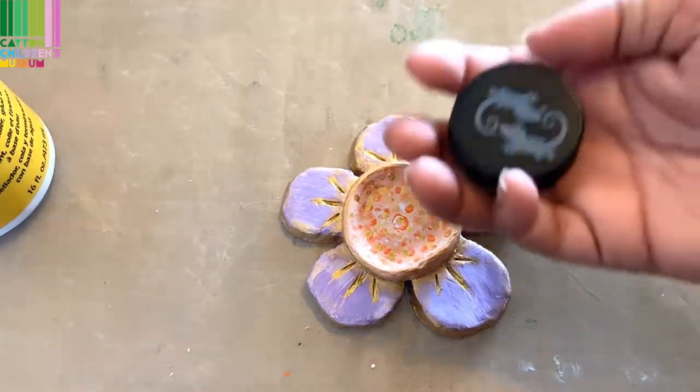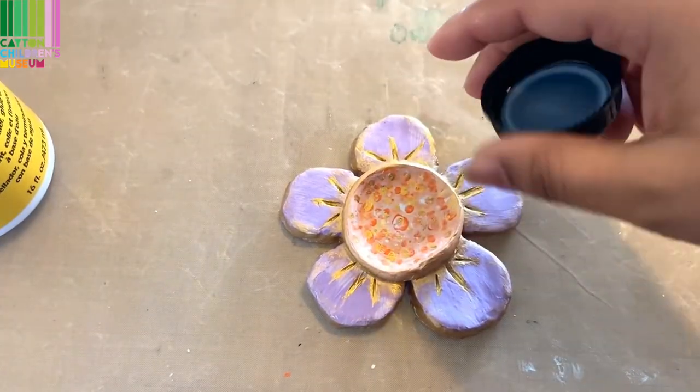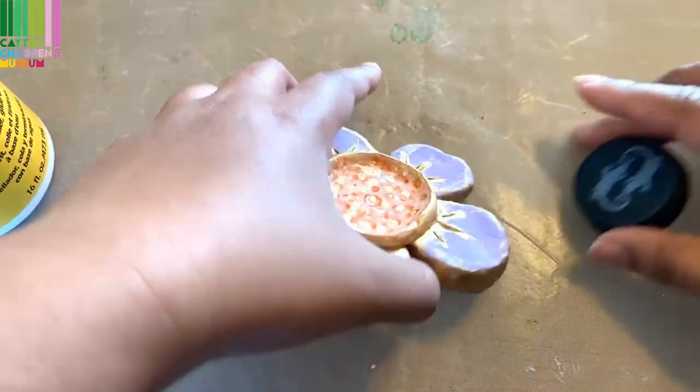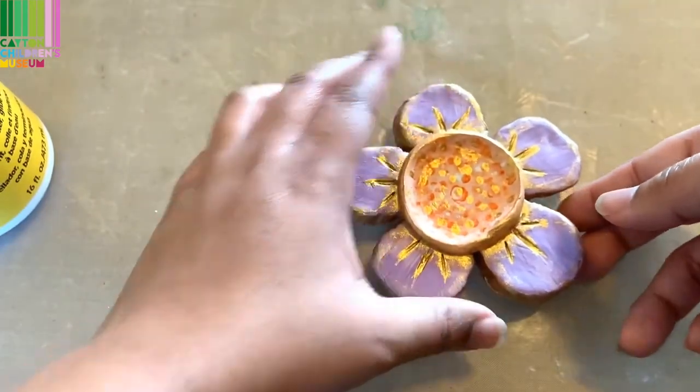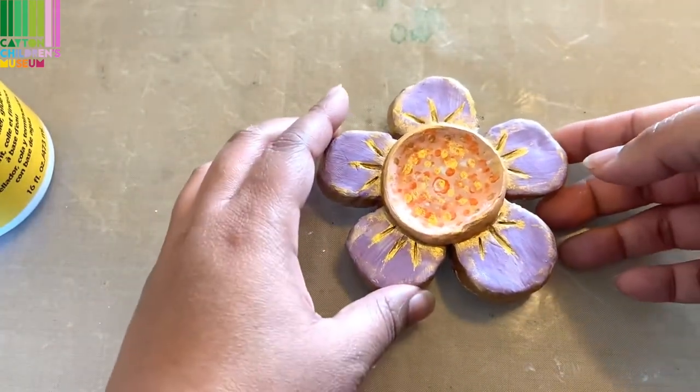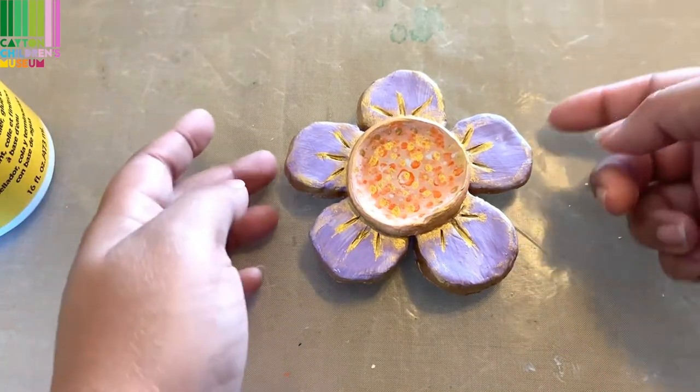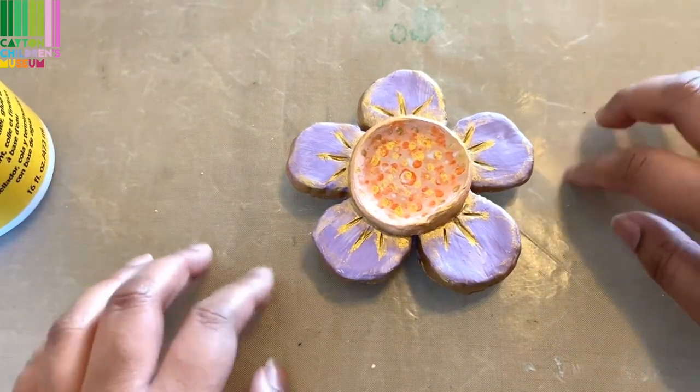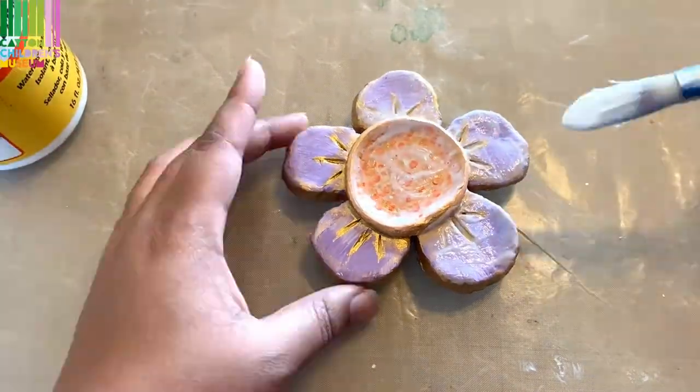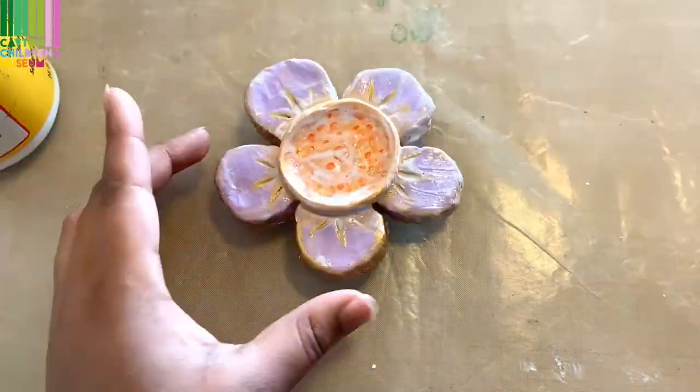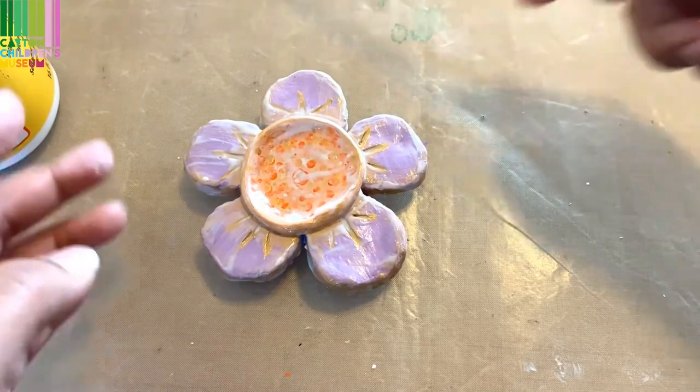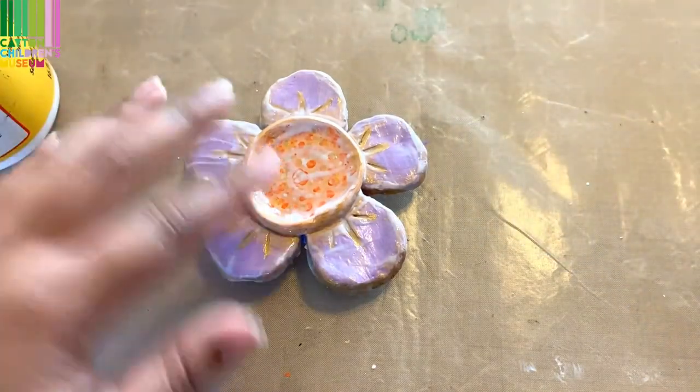And I'm just going to use a bottle cap here just to hold my candle holder up. So that way when I add the sealer on it, it will drip down the sides and my candle holder won't stick to here. All right, and now we'll just let this dry and we'll be right back.